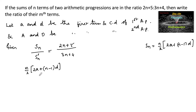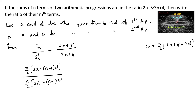Upon n by 2, for the second progression we have capital A, so we can write 2 times capital A plus n minus 1 into capital D, and this is equal to 2n plus 5 upon 3n plus 4.